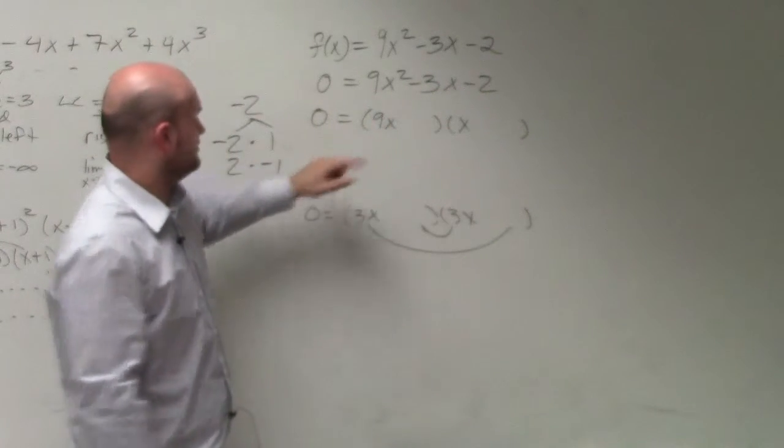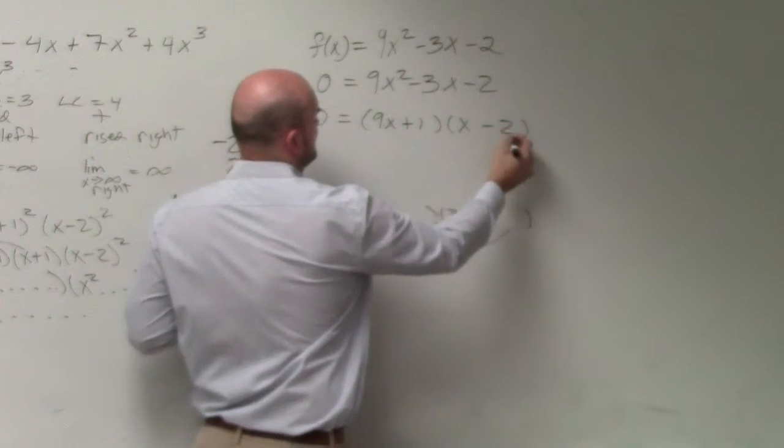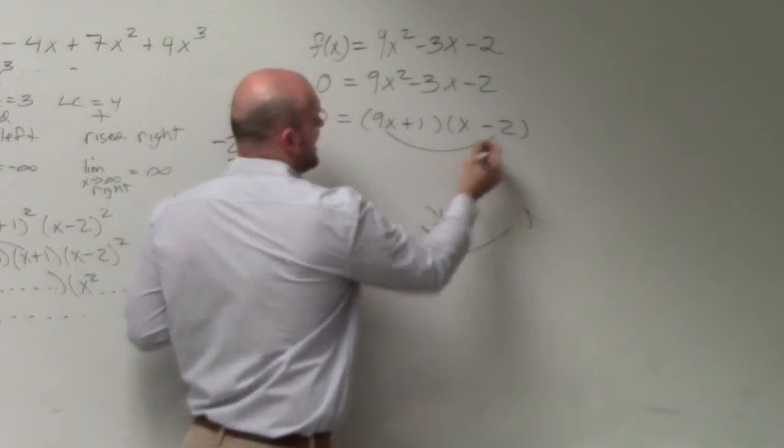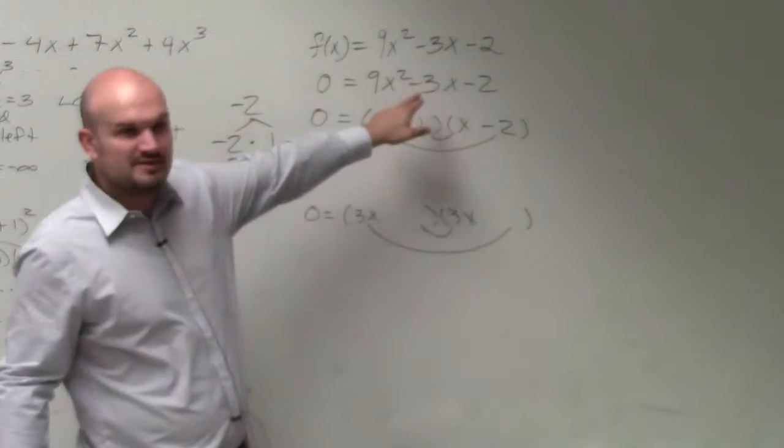So I've got to think, well, think about this. Let's say I did this, plus 1 and negative 2. Ladies and gentlemen, if I do 9x times negative 2 and 1 times x, is that going to give me a difference of negative 3?